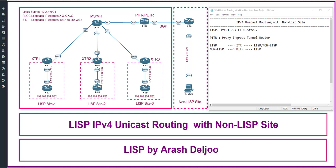The PITR attracts traffic from the non-LISP site by advertising coarse aggregate prefixes for the LISP EID namespace into the non-LISP networks. Here R5 acts as the PITR, connected via BGP to R6 — the ISP router. Using this aggregation, the PITR advertises a coarse aggregate of the LISP site networks, for example 192.168.254.0, into the internet-facing routing domain.